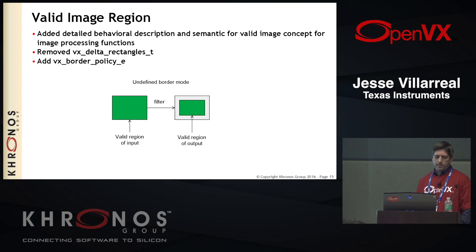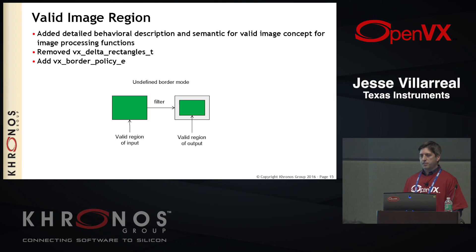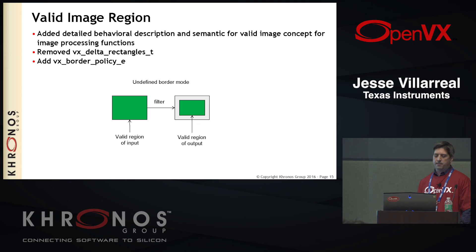We also had in 1.0 the concept of a valid image region, although its semantics were not well defined. There's a whole new section in 1.1 that goes through the detailed description of how the semantics are defined for a valid image region. Basically, if you have an undefined border mode, the question comes: what do you do with those pixels in the undefined border when you cascade through the graph? If you want to find the maximum value of the image and you've got garbage on the outside, you don't want to incorporate that in your calculation. This is just a definition of what to do with that.